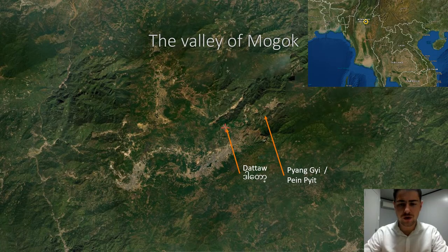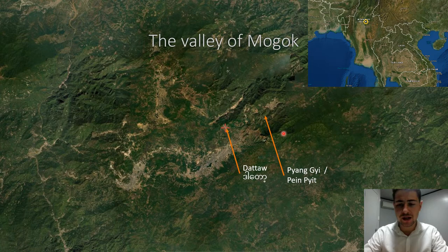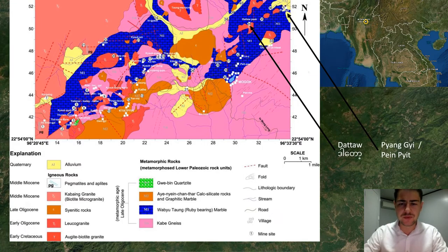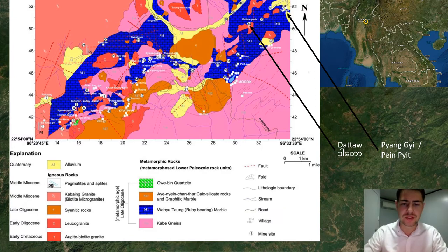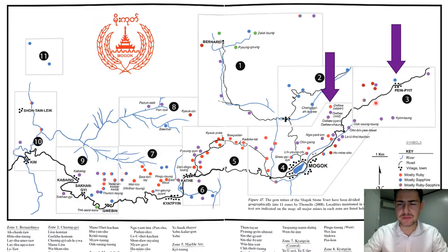That's the valley of Mogok where the samples are coming from. The marble-hosted ones are coming from Dato here, and the syenite with the hackmanite is coming from Pein-Pyit. On this map you can see where the road stops for foreigners that can't access the Pein-Pyit area, so you won't see pictures of this place.